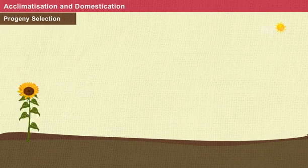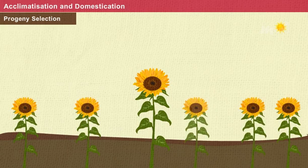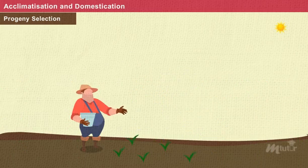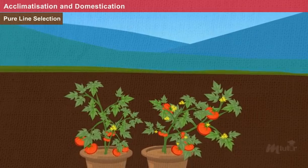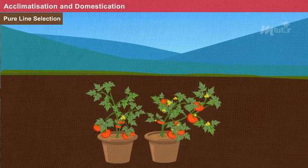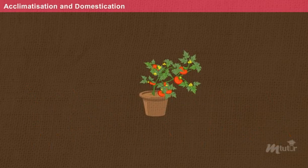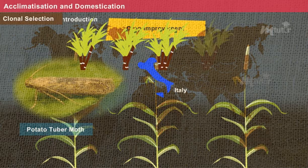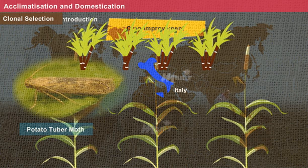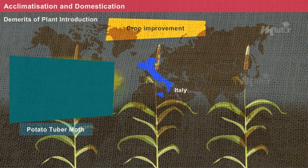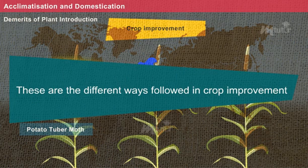Progeny selection is the process involving selection and cultivation of cross-pollinated crops. On the basis of performance, superior plants are selected and released as a new variety. Pure line selection involves the selection of self-pollinated crops that are later cultivated in isolation. From the isolated varieties, the best offspring is selected and released as a new variety. Clonal selection is the process of selecting asexually propagated crops that can be combined with the hybridisation process to produce a new variety with superior quality.